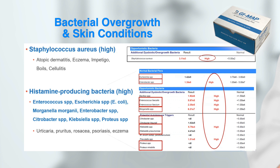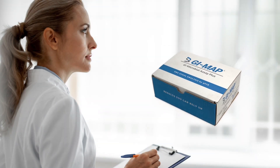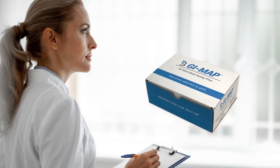Here are some of the species measured on the GI Map that are known to be histamine-producing species: Enterococcus species, Escherichia species (E. coli), Morganella morganii, Enterobacter species, Citrobacter species, Klebsiella species, and Proteus species. Those are some of the top organisms I'm looking for as I look through the report when working with a client with skin issues.